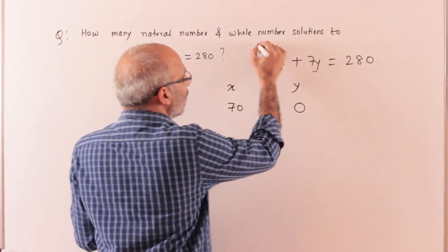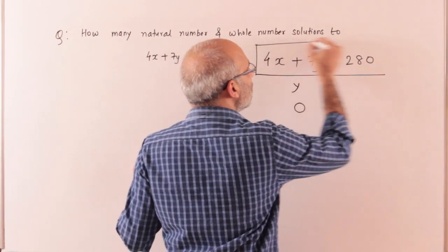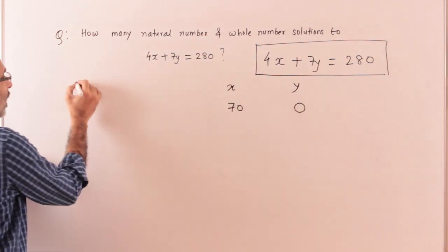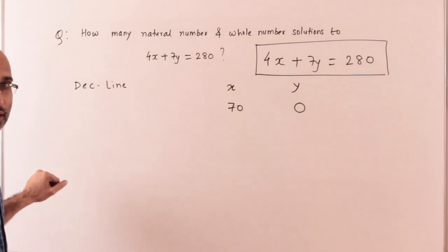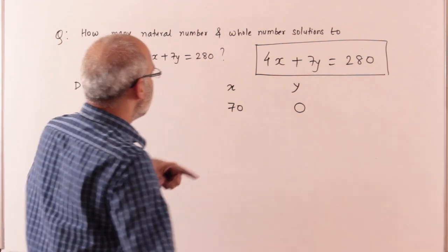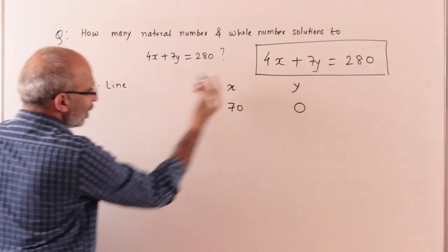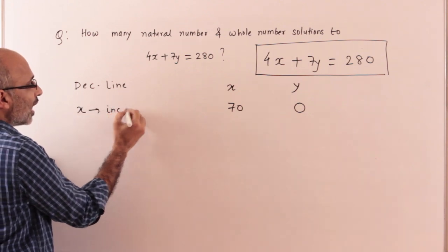Now think about this line: increasing or decreasing? It is a decreasing line. ax plus by equal to c is always a decreasing line, and we have seen this behavior.